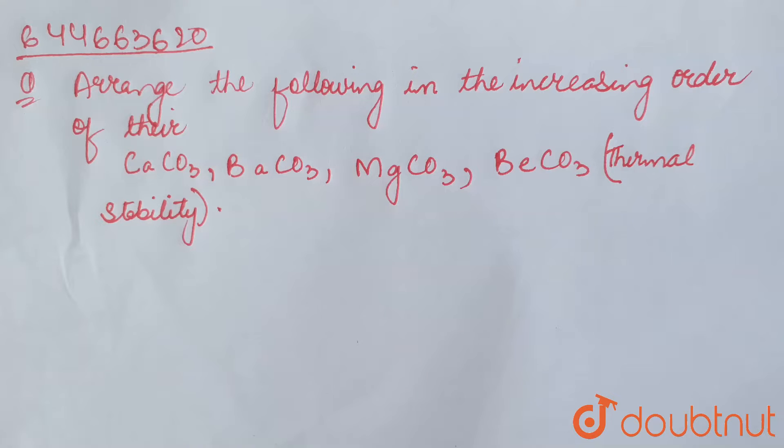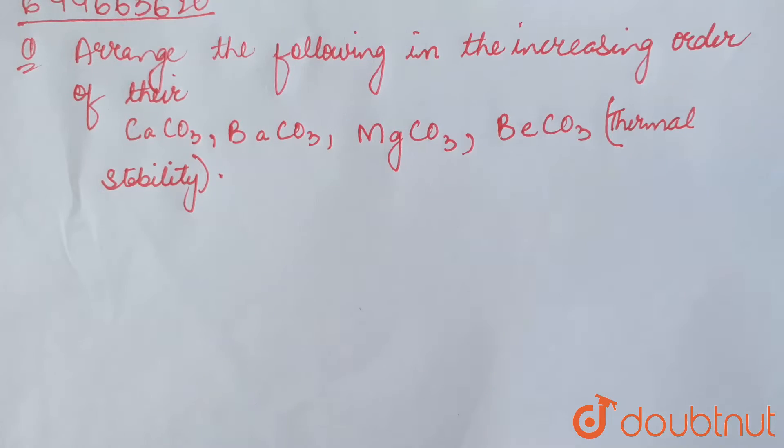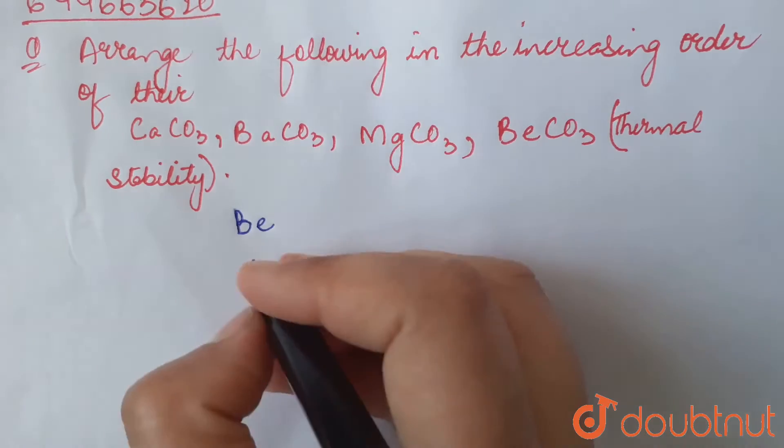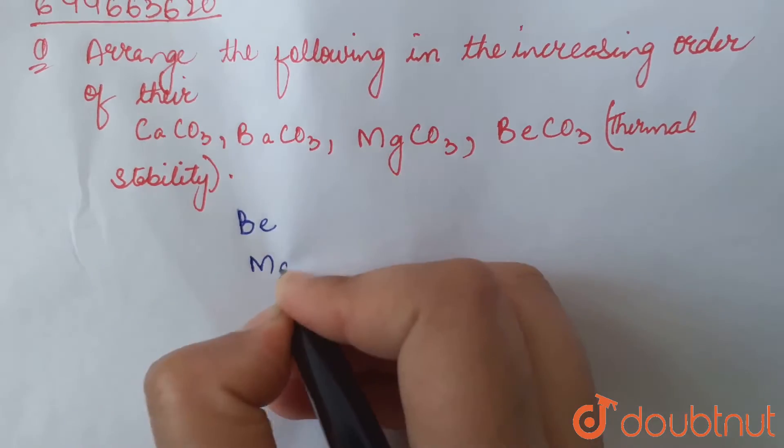The given carbonates are carbonates of alkaline earth metals. If we arrange these carbonates in the order in which they occur in the periodic table, we have beryllium, then magnesium...